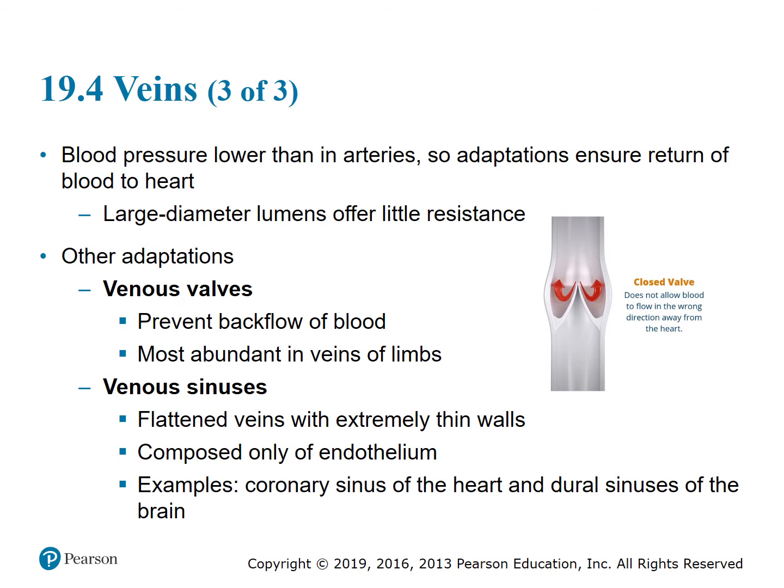Large diameter lumens offer less resistance. Other adaptations include venous valves that prevent backflow of blood, especially abundant in the veins of the limbs so blood does not pool in the lower extremities. Venous sinuses are flattened veins with extremely thin walls composed only of endothelium — examples include the coronary sinus of the heart and the dural sinuses in the brain.